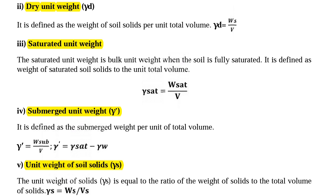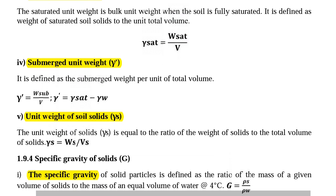Saturated unit weight is the bulk unit weight when the soil is fully saturated, defined as the weight of saturated soil to the unit total volume: gamma sat equal to W sat divided by V. Next, submerged unit weight gamma dash is defined as the submerged unit weight per unit total volume: gamma dash equal to W sub divided by V. Also, gamma dash equal to gamma sat minus gamma W.